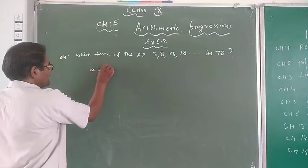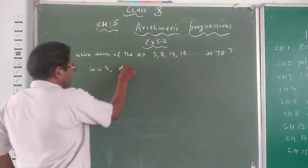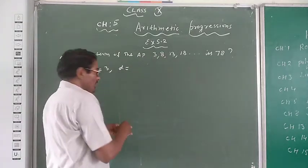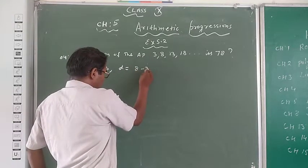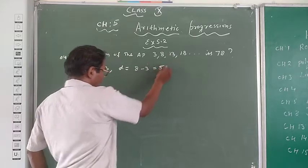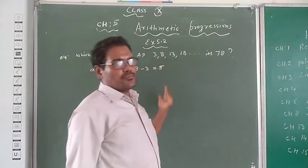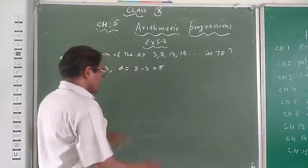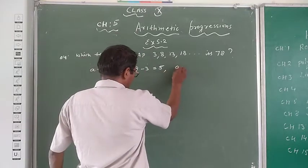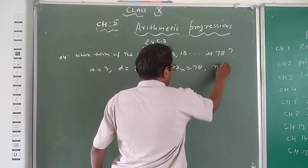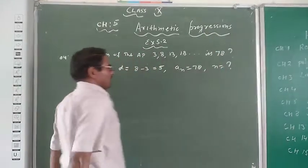So how do we get to know this? First term A is 3. What is the difference? Difference is second term minus first term, 8 minus 3, equal to 5. This term is increasing, so the last term is 78, and we have to find the value of n, number of terms.